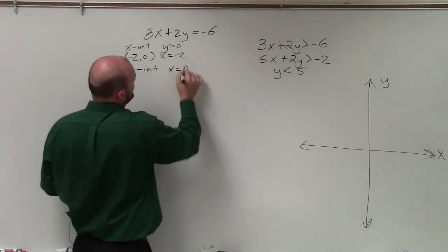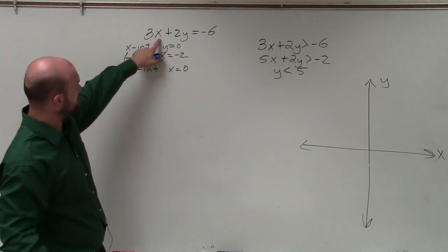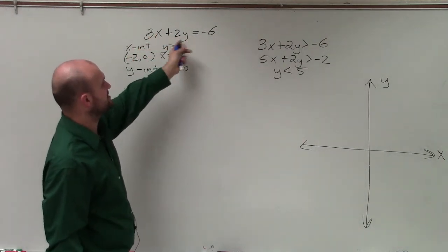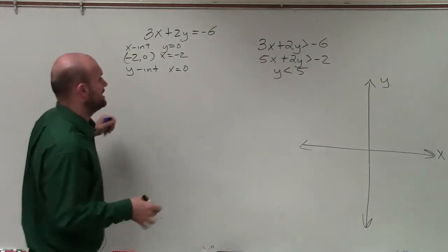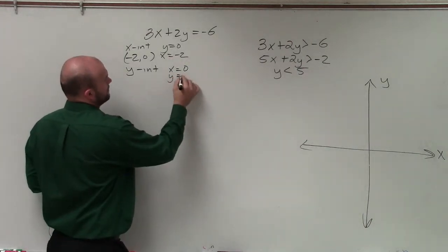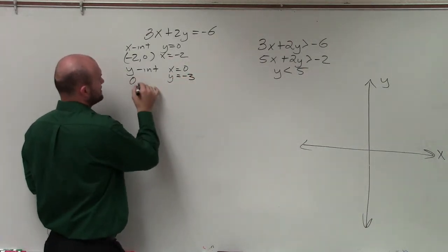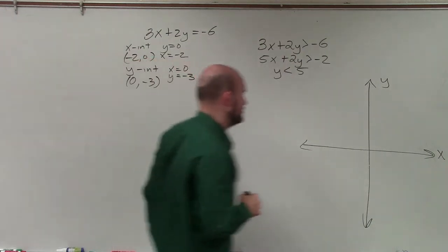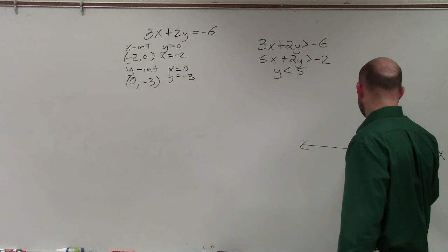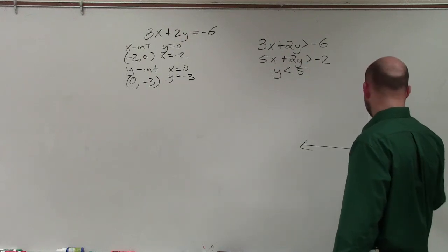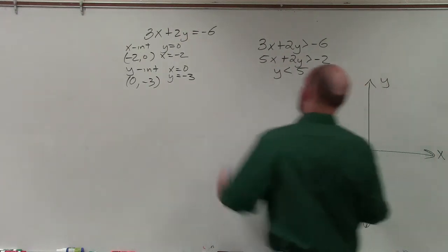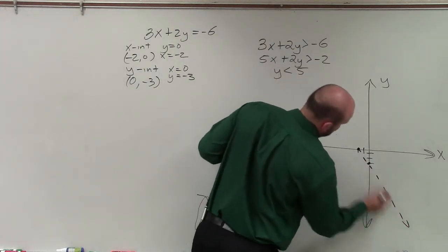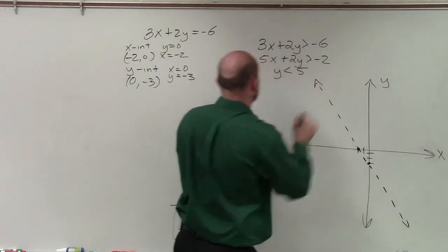To find the y-intercept, I just plug 0 in for x. So I put 0 in for x. 3 times 0 is 0. So I have 2y equals negative 6. Divide by 2 on both sides. y equals negative 3. So therefore, this coordinate is 0 comma negative 3. So let's go ahead and plot those two points. So I have negative 2, 0, and I have 0 negative 3. 1, 2, 3. And again, remember this boundary line is not a part of our solution. So we'll use a dashed line.